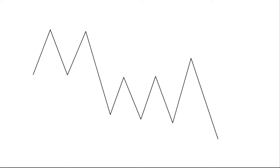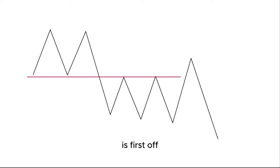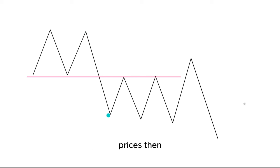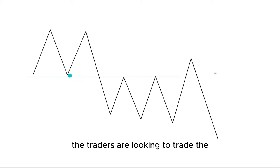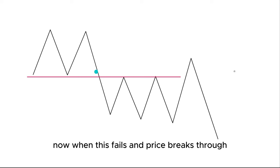Another common area of liquidity is support and resistance. Here we can see a very typical looking support and resistance area. By this red line, we can see this was first acting as a support level — price reacted from this level, pushed up, and eventually broke through. Price then consolidated underneath, reacting from this point, which then became a resistance level. Traders looking to trade the rejections of this support level would be looking to trade long, hoping price would push to the upside.